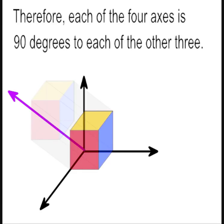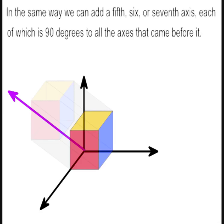Therefore, each of the four axes is 90 degrees to the other three. In the same way we can add a fifth, sixth, or seventh axes, each of which is 90 degrees to all the axes that came before it.